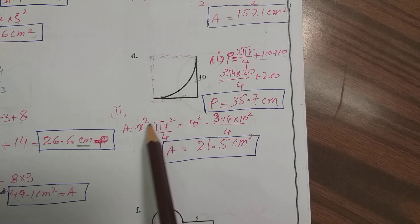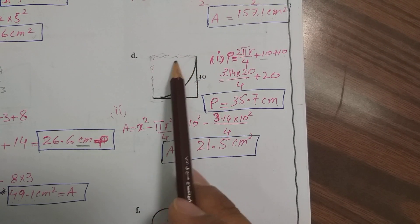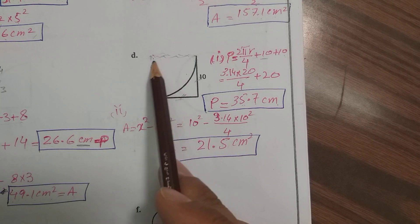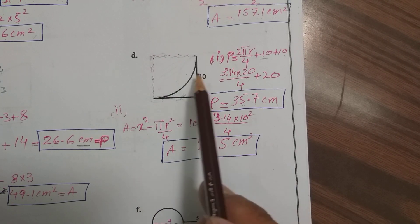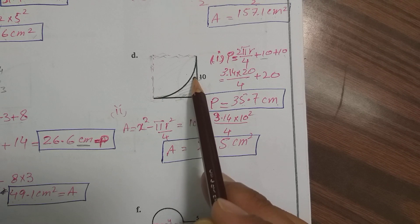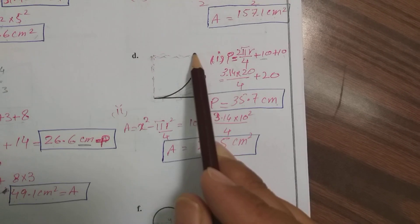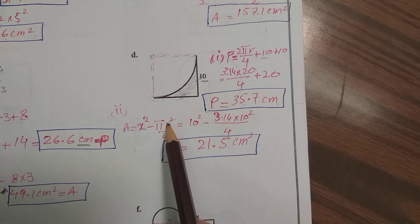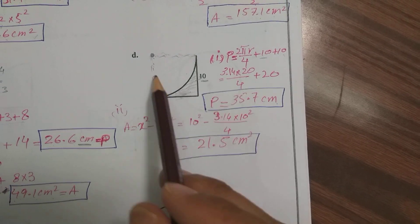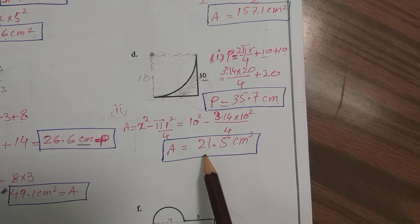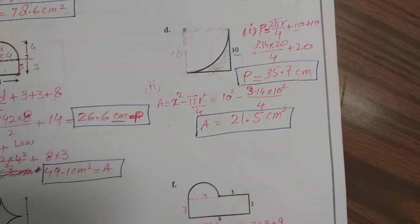To find the area of part d, we find the area of the complete square and then subtract the area of the quarter circle. Area of quarter circle is pi r squared divided by 4. We subtract it because the quarter circle part is the removed region — we only want the remaining area. The side of the square is 10 and the radius is also 10, since that is the center point. Simplifying gives 21.5 centimeters squared.